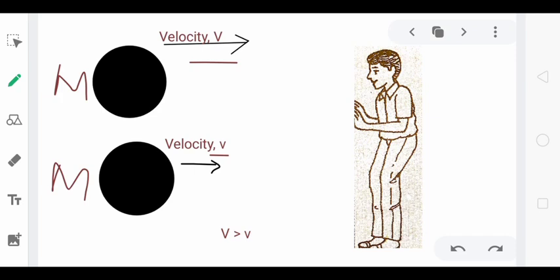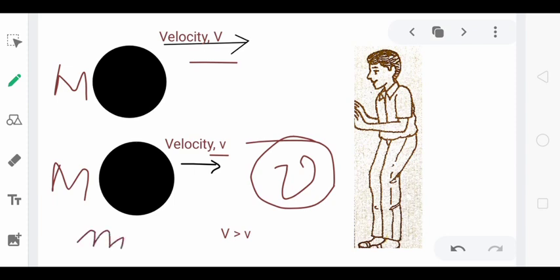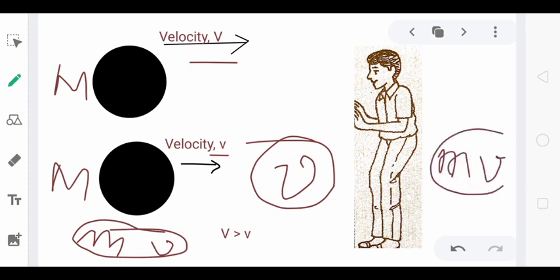So velocity is also a very important concept when we are going to study force. One is mass and the other is velocity. This mass and velocity product — we multiply it as mv, m into v — is a very important physical quantity to understand the concepts of force. So we have given a special name to mv, the product of mass and velocity. What is that name? Linear momentum.